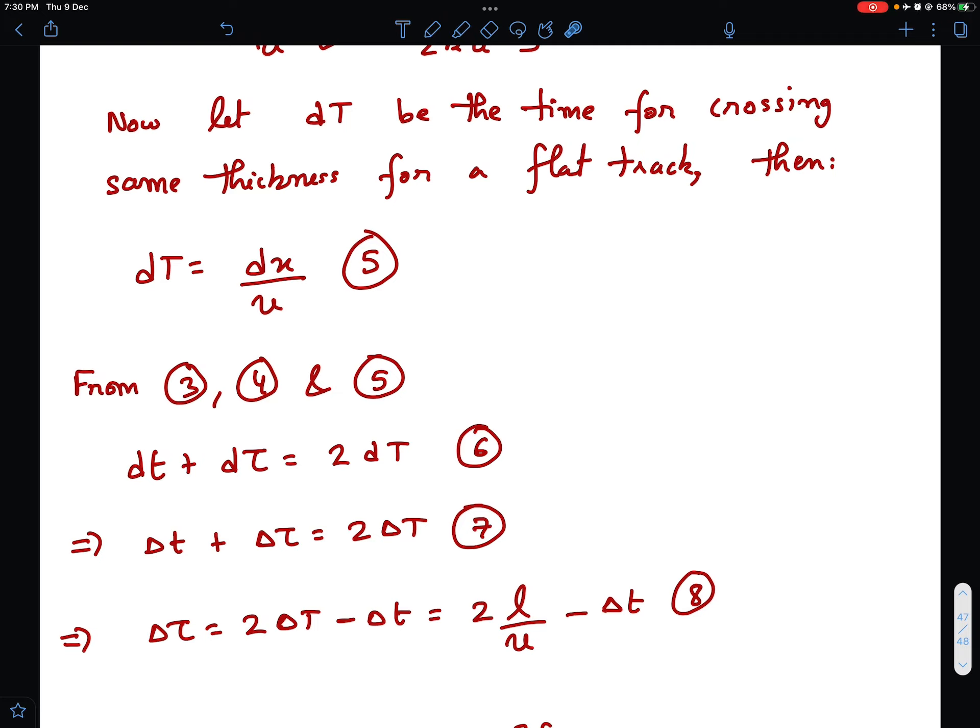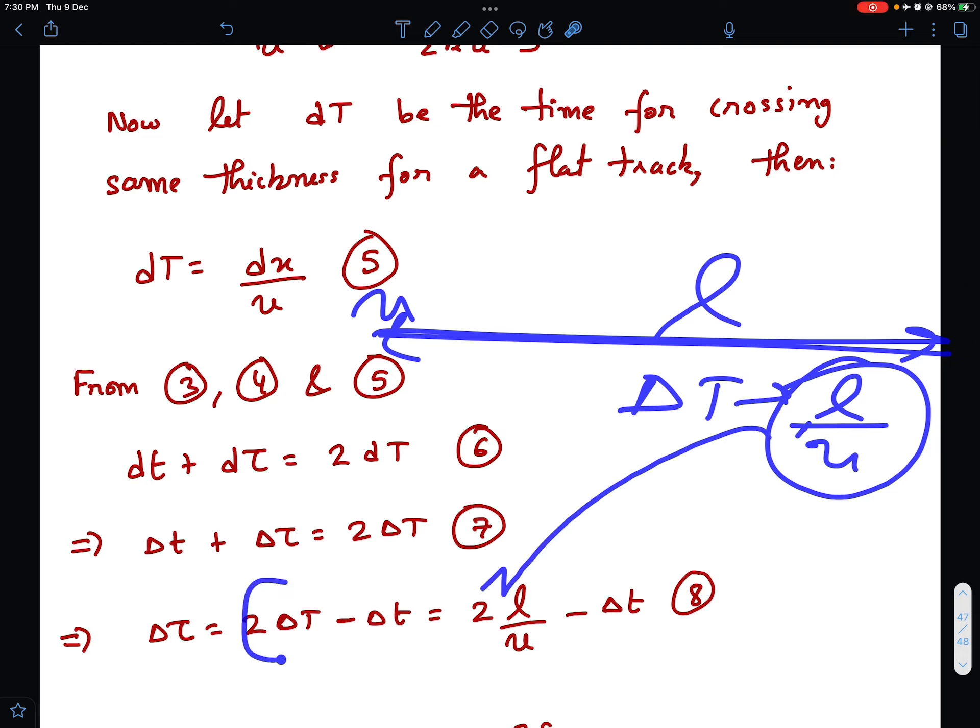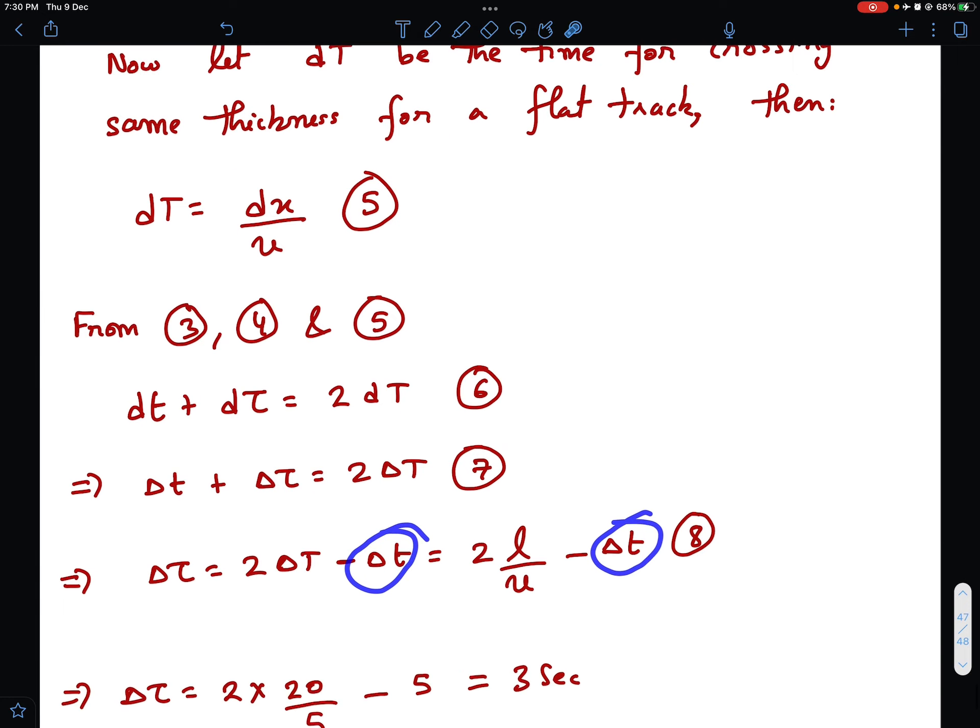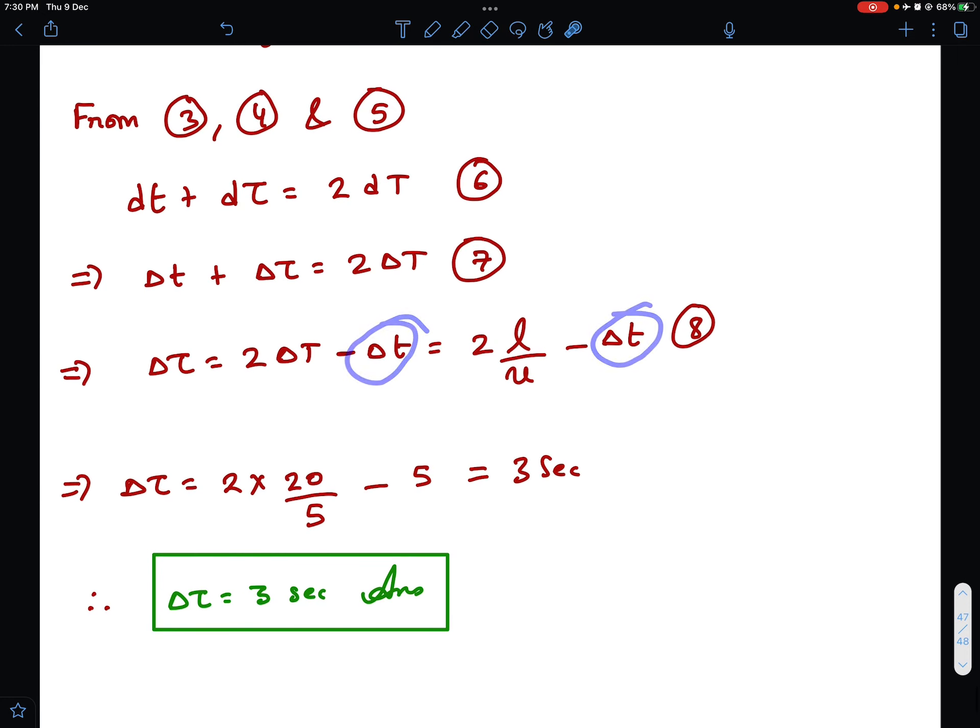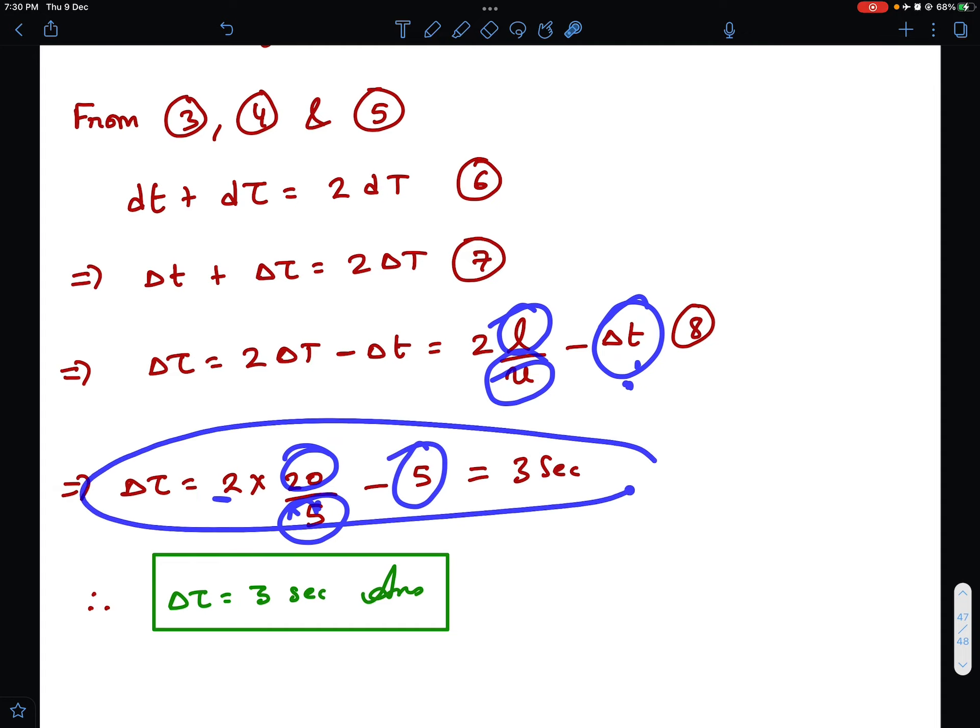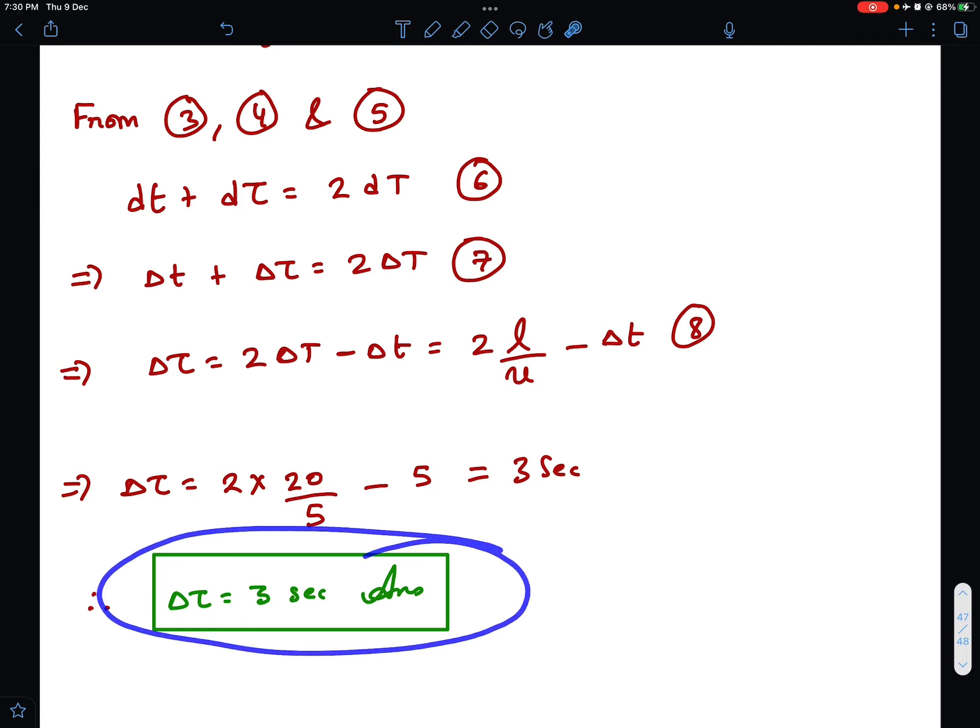What is ΔT? Capital T is the time taken along the flat path. If the total length is L and speed is u, then ΔT will be simply L/u. So that's what I have substituted. For ΔT I have put L/u and minus Δt comes as it is. Now you just need to put in the values. L is given as 20 meters and u is given as 5 meter per second. And Δt is given as 5 seconds. Just put in the values. You get the value of Δτ as 3 seconds.